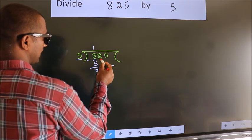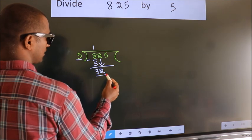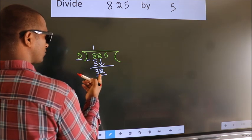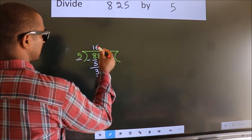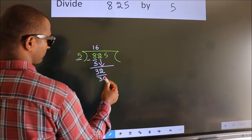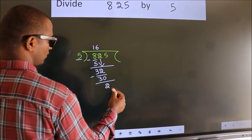After this, bring down the beside number. So, 2 down. So, 32. A number close to 32 in 5 table is 5, 6, 30. Now, we subtract. We get 2.